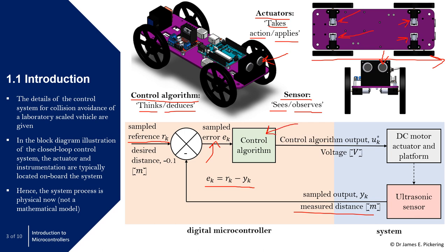We then have the control algorithm — I won't go into details now as later lectures will cover that. Based on the control action, if there's a difference between what we desire and what we're measuring, the control algorithm is configured and tuned to take action to minimise or eliminate the error. The control algorithm is embedded onto the microcontroller, the Arduino Uno.